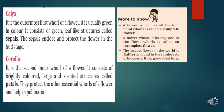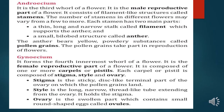The third part of a flower is Androecium. It is the male reproductive part of a flower. It consists of stamens and anther. The anther bears a yellow powdery substance called pollen grains, which take part in the reproduction of the flower.